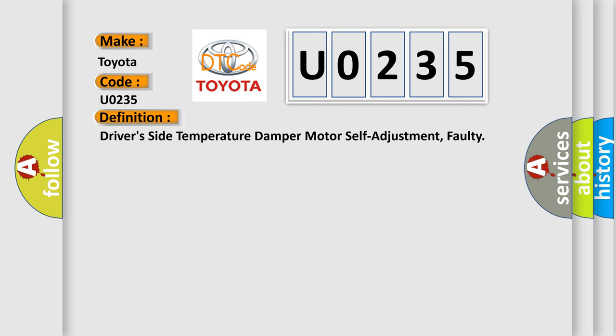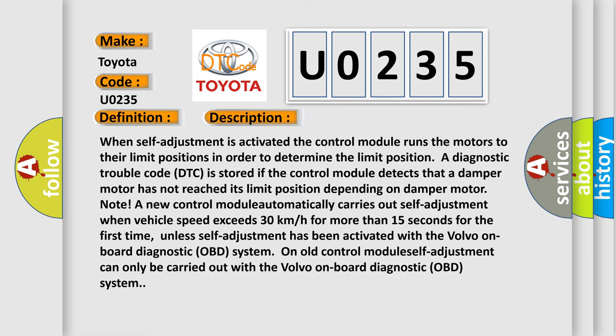Here is a short description of this DTC code. When self-adjustment is activated, the control module runs the motors to their limit positions in order to determine the limit position. A diagnostic trouble code DTC is stored if the control module detects that a damper motor has not reached its limit position. A new control module automatically carries out self-adjustment when vehicle speed exceeds 30 km/h for more than 15 seconds for the first time, unless self-adjustment has been activated with the onboard diagnostic OBD system. On an old control module, self-adjustment can only be carried out with the onboard diagnostic OBD system.